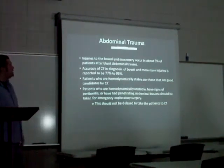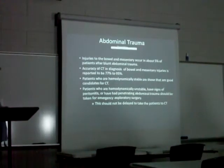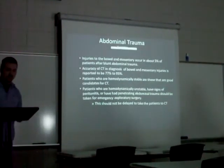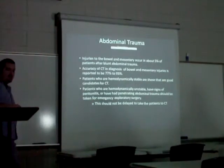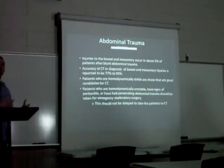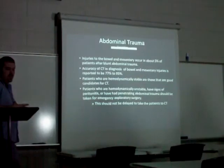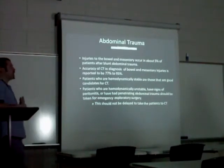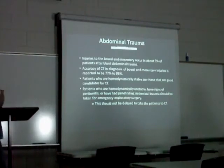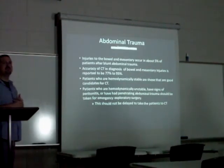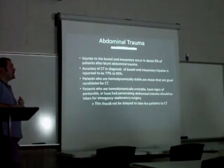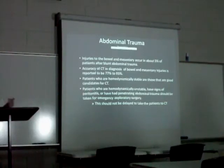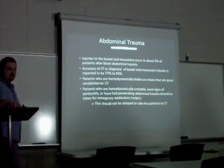Regarding abdominal trauma, the textbook has an entire chapter devoted to it. Injuries to the bowel and mesentery occur in about 5% of patients with blunt abdominal trauma. CT accuracy in diagnosing bowel and mesenteric injuries is approximately 77 to 95%. Hemodynamically stable patients are good candidates for CT. Unstable patients who are losing blood rapidly should go directly to exploratory surgery rather than waiting for CT imaging.